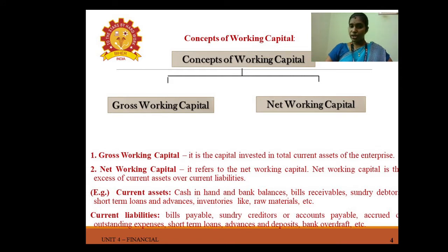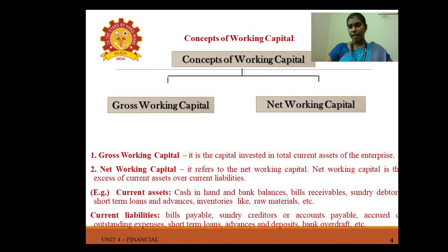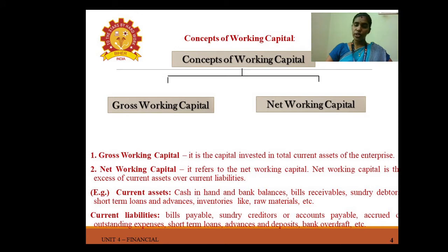Current assets include cash in hand and bank balance, bills receivables, sundry debtors, short-term loans and advances, deposits, and inventories such as raw materials and semi-manufactured goods. Current liabilities include bills payable, sundry creditors, accounts payable, accrued or outstanding expenses, short-term loans, advances and deposits, and bank overdrafts.